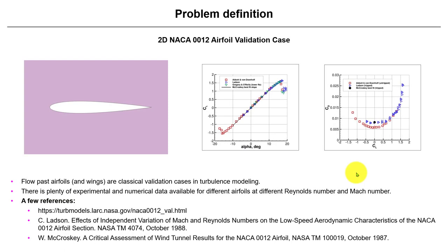Hi there, welcome to tutorial eight. In this case, we're going to work with a classical case in CFD validation - the flow about an airfoil. We're going to use the NACA 0012, and this case has a lot of validation data.